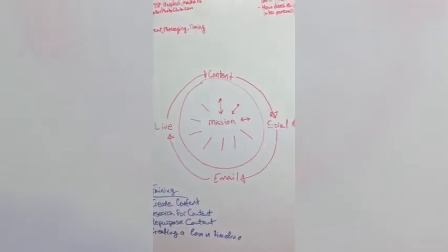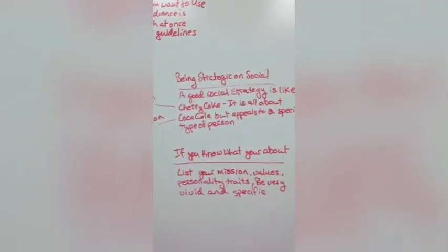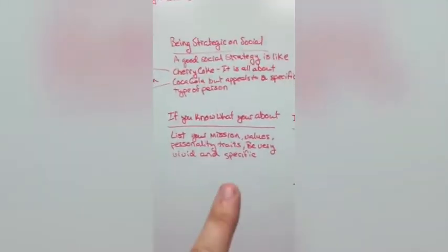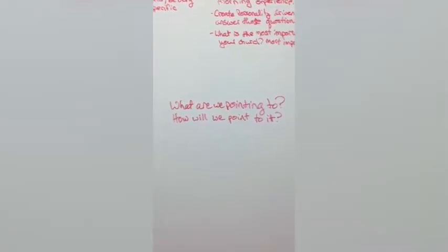Now that we've looked at the overall mission wheel and broken it down into the social section with the five parts of a social strategy, we look at the strategic part in particular. Being strategic on social has nothing to do with what platform you use, what tools you use, what time you post, or how often you post. Those things fit into the strategy, but they are not the strategy itself. The crux of it all is: what are we pointing to, and how will we point to it? That's what your social strategy comes down to — the mission and the values.